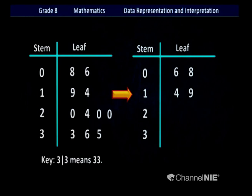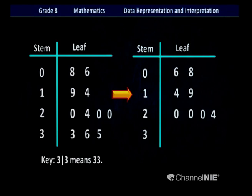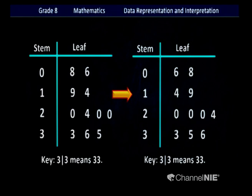In the third row, leaf has 0, 4, 0, 0 — rearranged in ascending order as 0, 0, 0, then 4. In the last row, leaf has 3, 6 and 5 — rearranged as 3, 5 and 6. Now we can write the key: 3 in stem side and 3 in leaf side means the value 33.